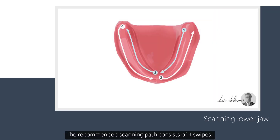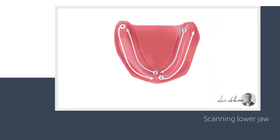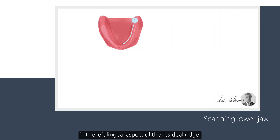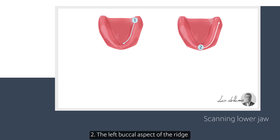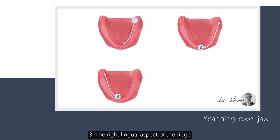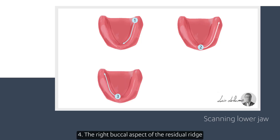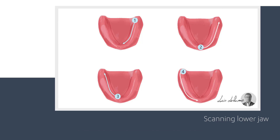The recommended scanning path consists of four swipes: the left lingual aspect of the residual ridge, the left buccal aspect of the ridge, the right lingual aspect of the ridge, and the right buccal aspect of the residual ridge.